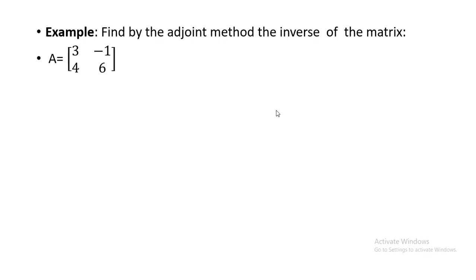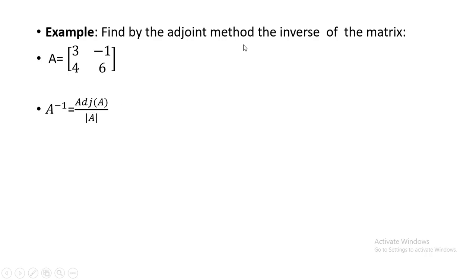I have taken a two by two matrix — a matrix with two rows and two columns. That matrix A has elements 3, minus 1, 4, and 6. This is the main formula for finding out the inverse, especially when doing it with the help of the adjoint method.